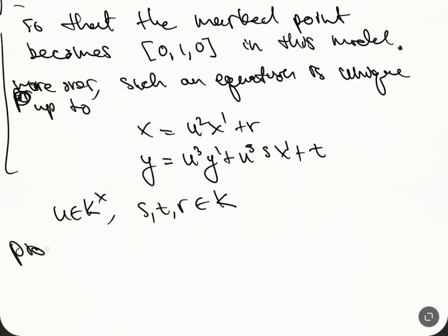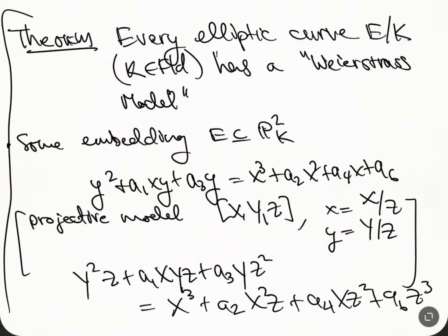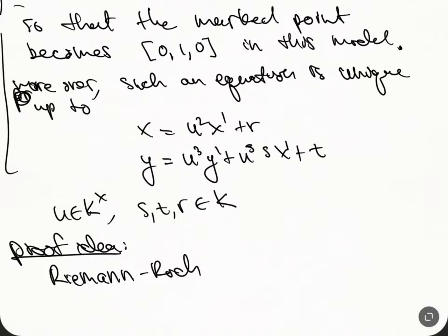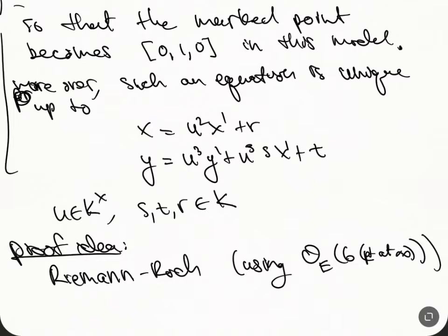The proof idea — which you can find online or probably on YouTube — uses Riemann-Roch. You use the linear system of 6 times the point at infinity, and then you use variable substitutions to arrive at the Weierstrass form.